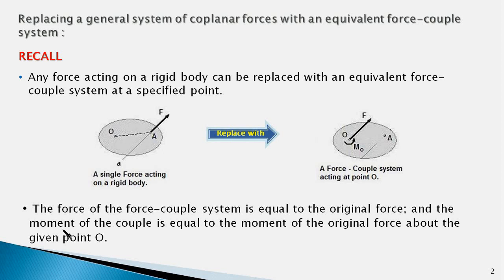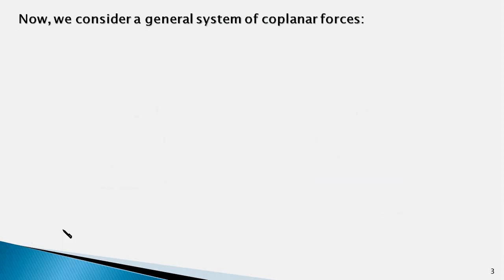So let's use this knowledge in simplifying a general system of coplanar forces. As you can see in this diagram, a rigid body is acted upon by three forces which form a system of coplanar and non-concurrent forces. All these forces F1, F2 and F3 lie in the same plane, and if you extend their action lines backwards, you would notice that they do not meet at a single common point, and therefore they form a non-concurrent system of forces.